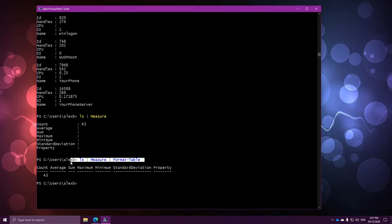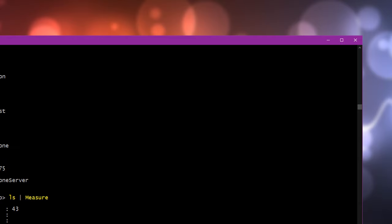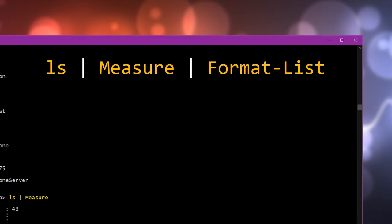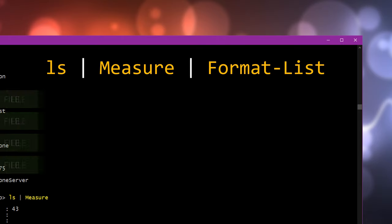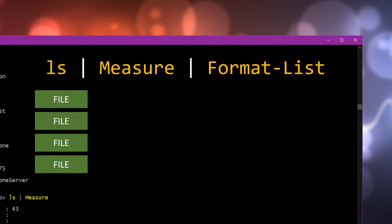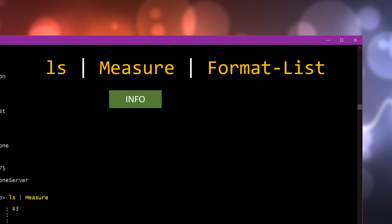Now let's just break this command right down so we know exactly what's going on. First, we run ls, and this gives us a load of objects. Then we pipe those objects into measure. What measure does is it analyzes the objects and works out the count and sum and things like that, and gives us another object with those values in it. And then finally, we give that small object to format-table, which turns it into text and PowerShell prints that out for us. It's all one nice chain, one after another.